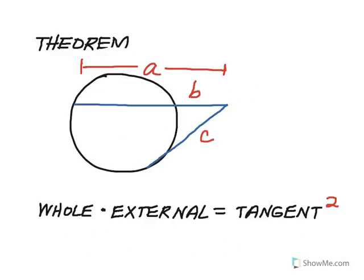The third theorem has to do with when you have a secant segment and a tangent segment drawn from a point external to the circle. The result is that the product of the whole secant times the external part is equal to the tangent segment squared. So in this diagram, A times B — the whole secant times the external piece outside the circle — is equal to the square of the tangent, so C squared. And that will always be true.